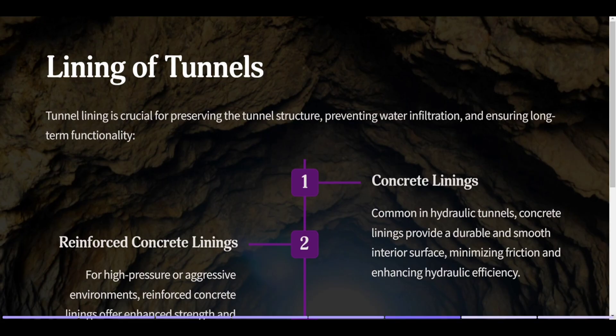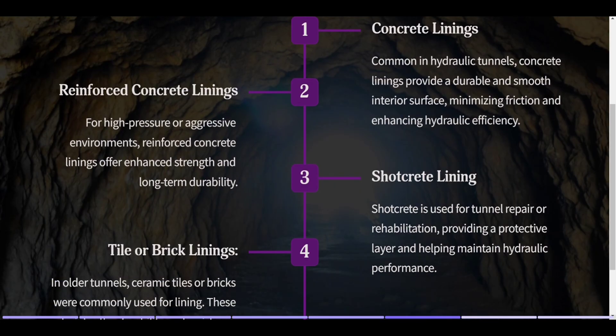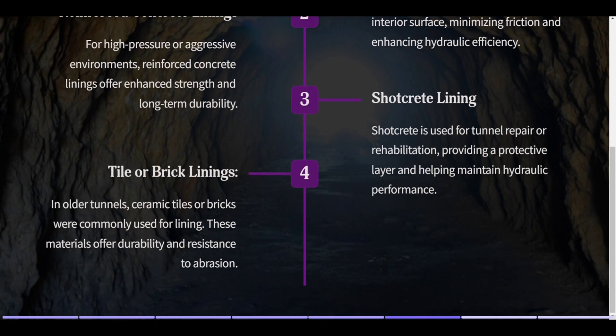Lining of tunnels is crucial for preserving tunnel structure, preventing water infiltration, and ensuring long-term functionality. Concrete linings are common in hydraulic tunnels, providing a durable and smooth interior surface that minimizes friction and enhances hydraulic efficiency. Reinforced concrete linings offer enhanced strength for high-pressure or aggressive environments. Shotcrete lining is used for tunnel repair or rehabilitation. Tile or brick linings, used in older tunnels, offer durability and resistance to abrasion.